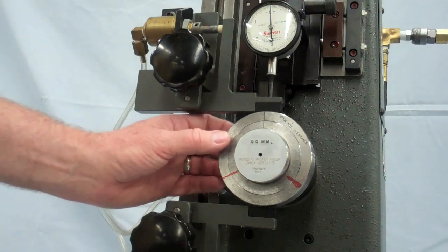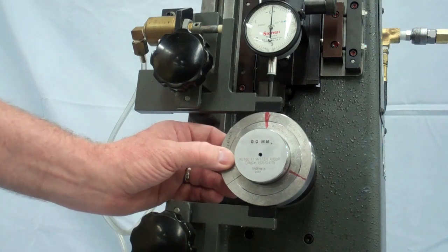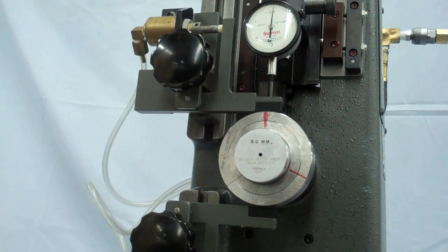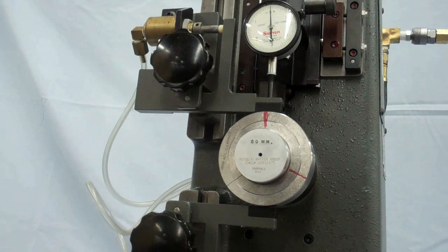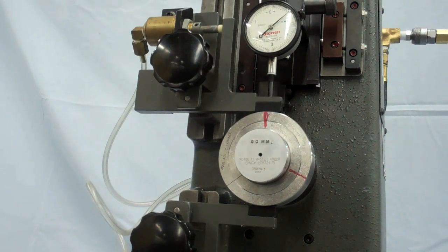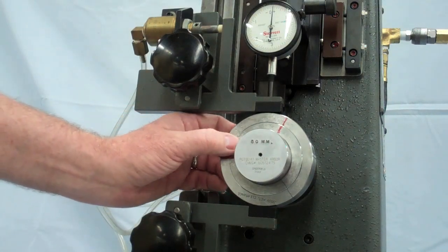In this video, we are taking a reading in three places, approximately a third, a third, and a third around the master. It is imperative that the engraved lines on the two members are lined up during mastering.